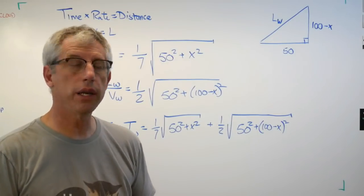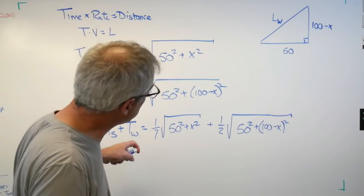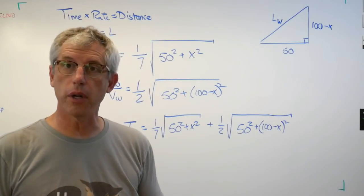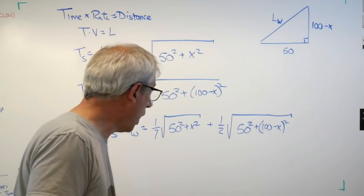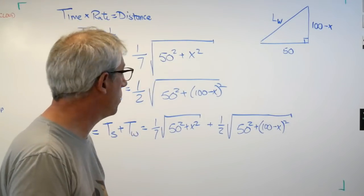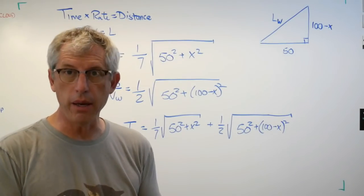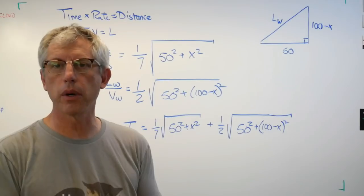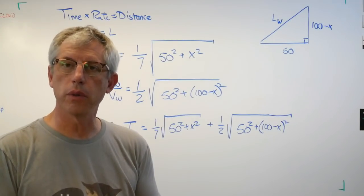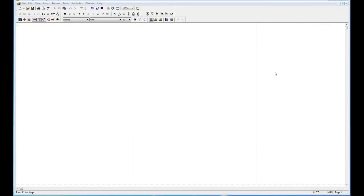We're trying to find the minimum of that expression — the point x where the lifeguard enters the water that gives the shortest total time to reach the swimmer. There are a couple of ways to do this. I'm going to step away from the board, get on the computer, and show you how to do this in MathCAD first, because that's a little simpler, and then we'll switch over to MATLAB.